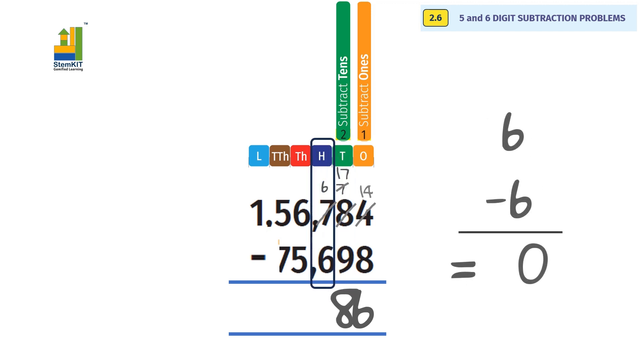Subtracting hundreds. 17 minus 9 equals 8.